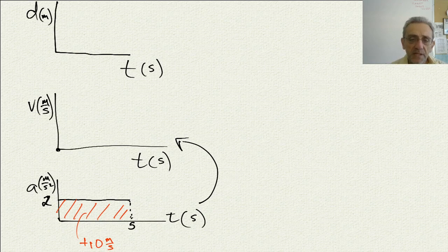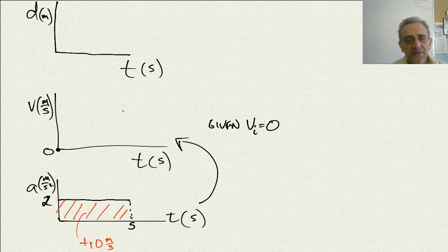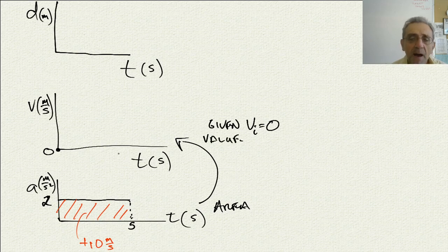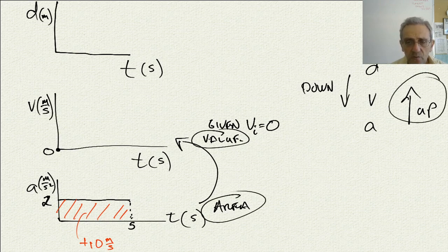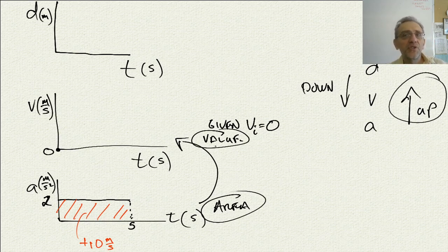For example, if I gave the initial velocity here as zero — so if I gave you v_i equals 0 — then you can get this graph. I may have mentioned in the past that the area is equal to the value in the graph above. This isn't exactly correct. In this particular problem it's correct, but it's not a general rule. I'd like to clarify this and show you what the general rule is.